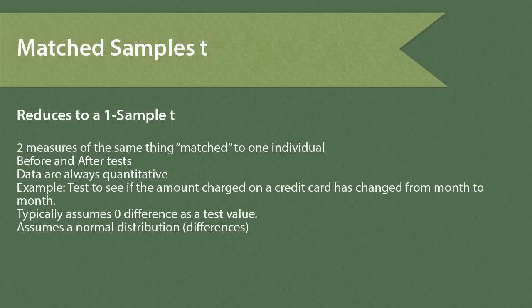The matched samples T. This technique reduces to a one-sample T because although we're considering two measures of the same thing, these two measures are matched to one individual, such as in a before and after test. The data are always quantitative, so we compute differences between the two measures, and those differences become our one sample of data. For example, test to see if the amount charged on a credit card has changed from month to month.